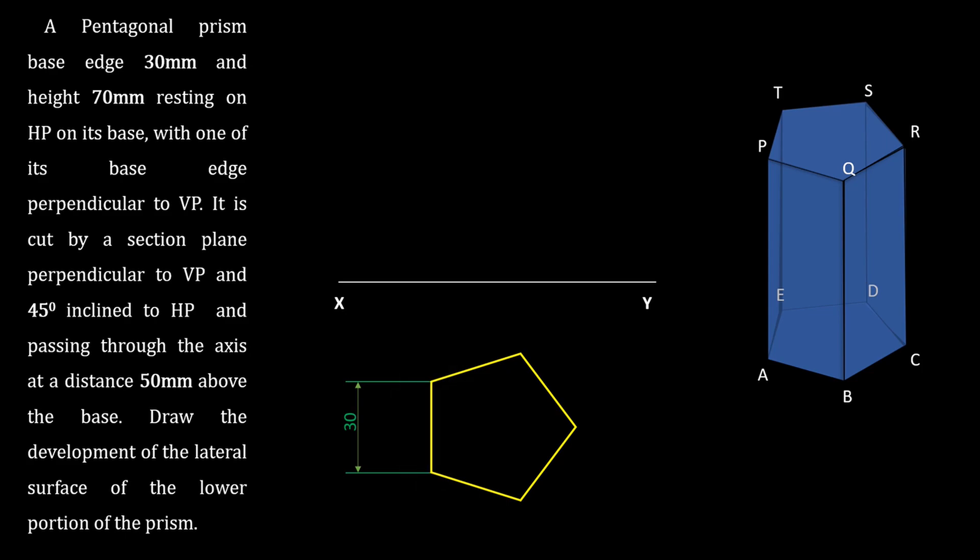From the given data, we fix this base edge as perpendicular to VP. Name the top view. I am going to name the solid in anti-clockwise direction. Base A, B, C, D and E which are hidden in top view.